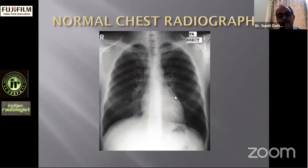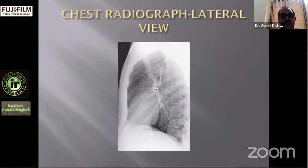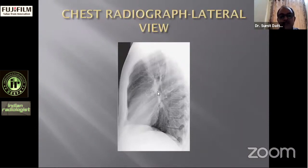The left ventricle forms the left heart border including the apex, while the base of the heart is formed by the right ventricle. In lateral projection, the anterior silhouette is mainly a contribution of the right heart border — inferiorly by the right ventricle and superiorly by the right atrium — while posteriorly it is mainly the left chambers: superiorly the left atrium and inferiorly the left ventricle. The left bronchus is visible just posterior to the left atrium.